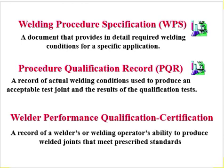PQR — you first make a preliminary WPS, and within that WPS you then make the PQR. What is PQR? It is the record of the actual welding conditions used to produce an acceptable test joint, as the result of the qualification test. The values — current, ampere, voltage — are qualified in the PQR. If all the PQR tests are acceptable, then the final WPS is prepared. The PQR is a written record of the weld procedure and the tests performed on the weld to ascertain the procedure did indeed produce an acceptable weld.